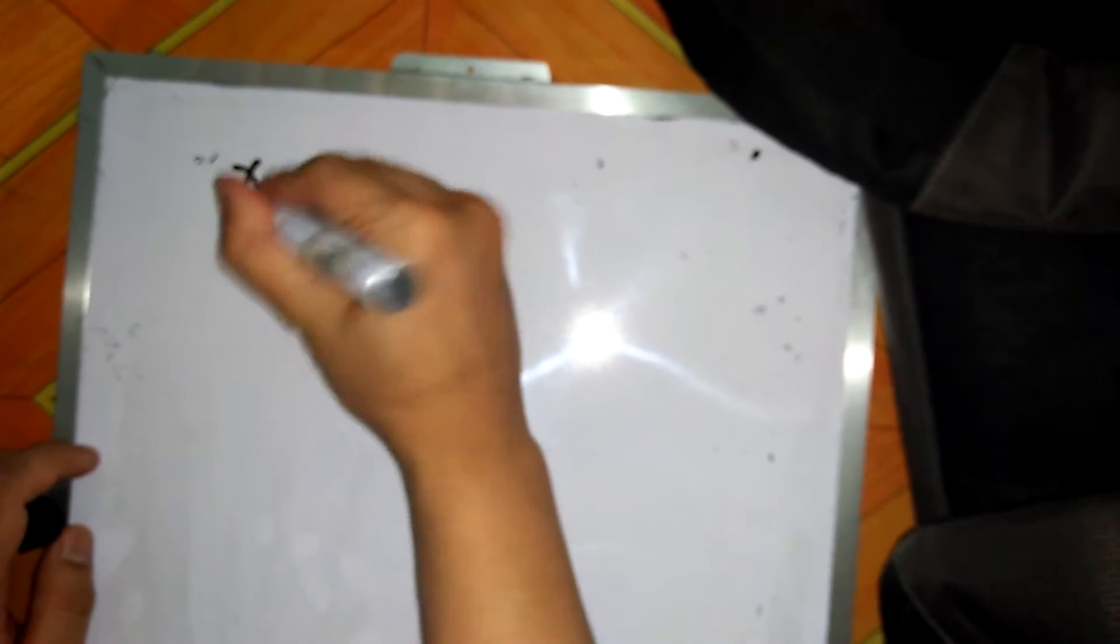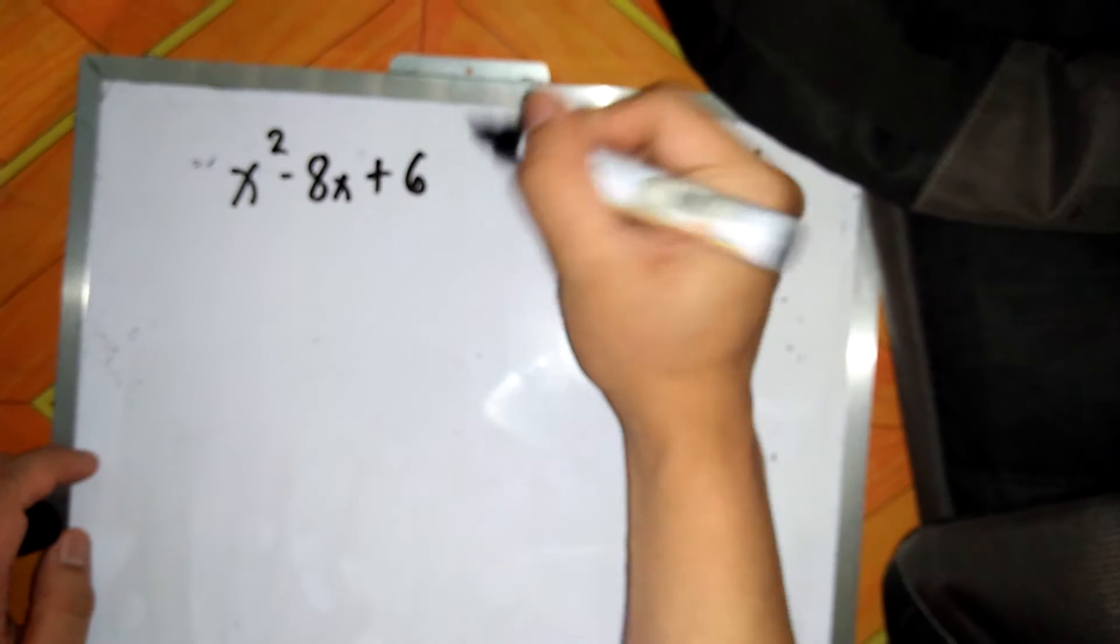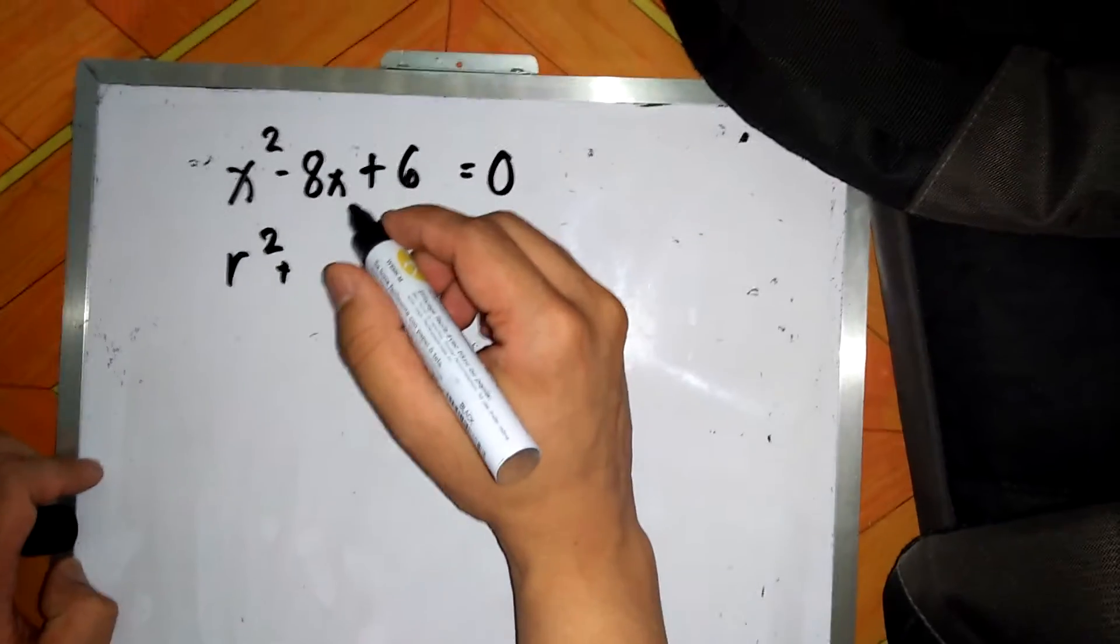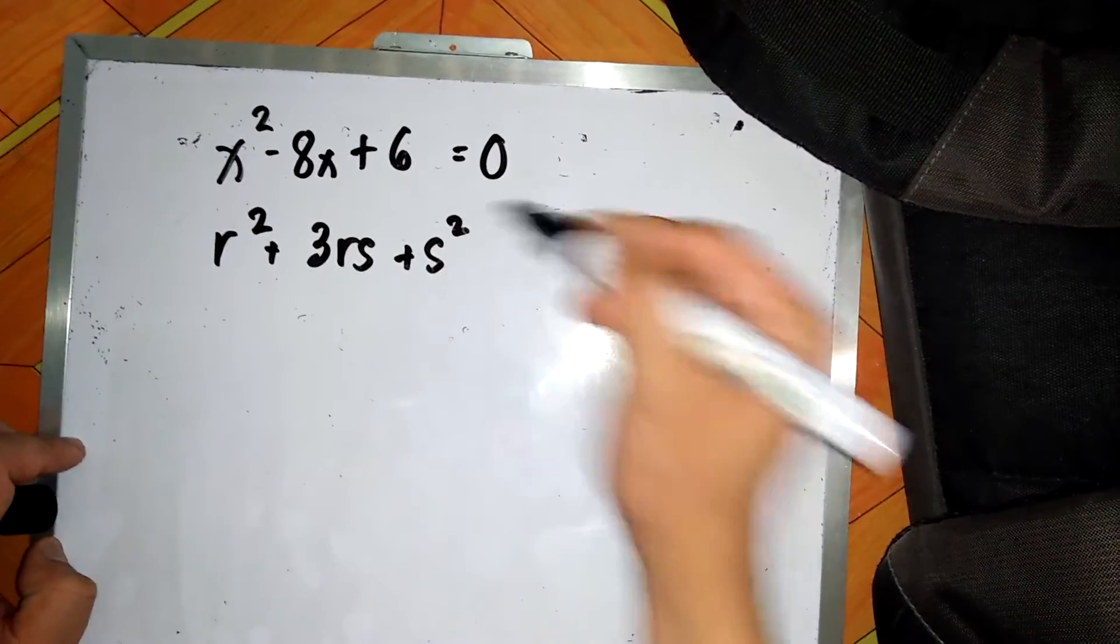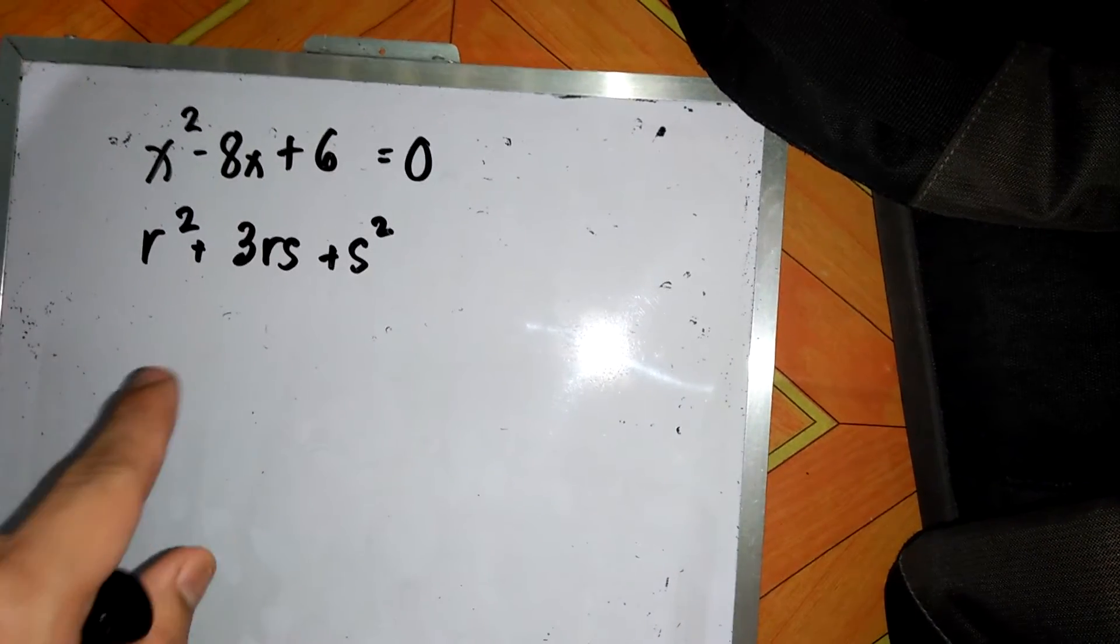Okay, so we now go with the whiteboard. So the problem is x squared minus 8x plus 6 equals 0, and we are asked to find r squared plus 3rs plus s squared, given that r and s are the roots.